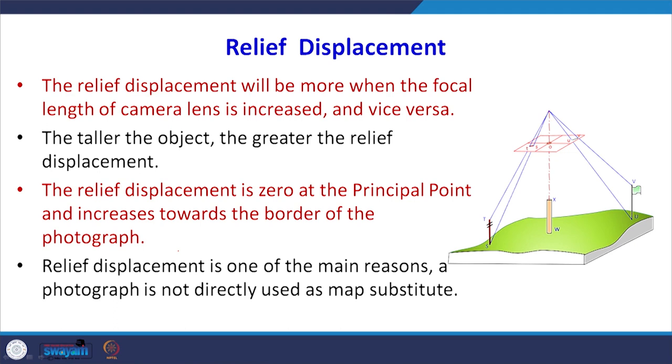Higher the relief, more will be the distortion present in the photograph. Relief displacement is also related to height, related to focal length, and related to the type of features and their height. If the focal length of the camera lens is increased, the relief displacement becomes more on the photograph, and vice versa. Taller the object, greater is the relief displacement in the photograph.